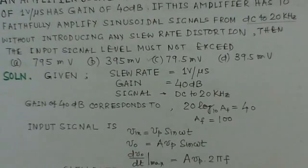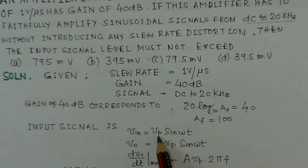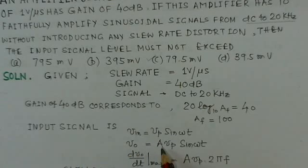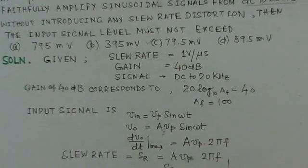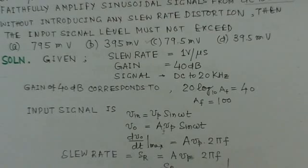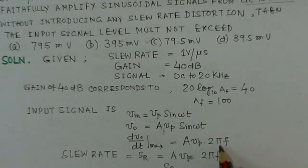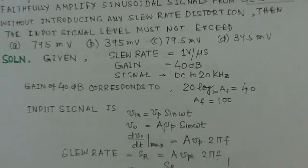The input signal is Vin = Vp·sin(ωt), where Vp is the peak value. The output is V0 = AF·Vp·sin(ωt), with a gain of 100. To determine the slew rate, we take dV/dt, the slope of the output sine wave signal. The maximum slope is dV0/dt|max = A·Vp·2πf, where cos(ωt) = 1 at its maximum. Therefore, the slew rate equals A·Vp·2πf.